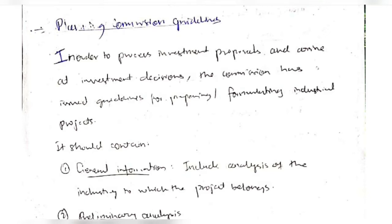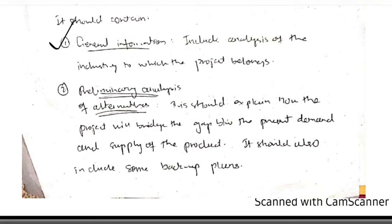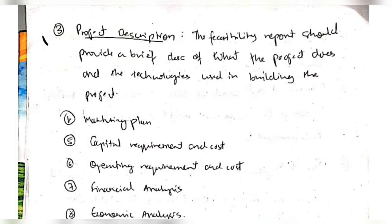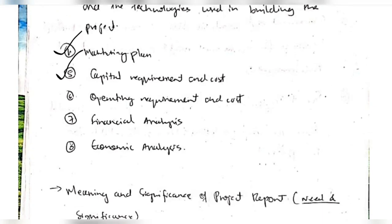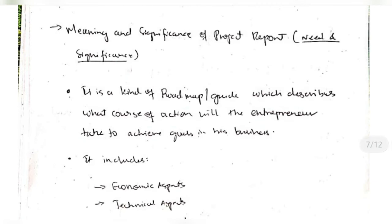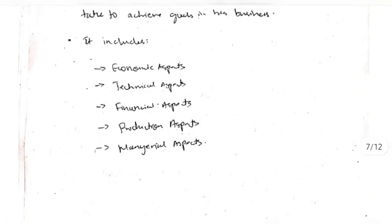In corporate terms, the project report should contain general information including analysis of the industry — the historical background and the objectives of the industry — preliminary analysis of the alternatives like some backup plans, and it should explain how the project is bridging the gap between the current supply and the demand. It should be followed by the project description covering what the project will do and what technologies it will use. After that we have subtopics like marketing plan, capital requirement and cost, operating requirement and cost, and financial and economic analysis. The need for a project report is that it serves as a roadmap to keep track of progress, covering economic, technical, financial, and managerial aspects.